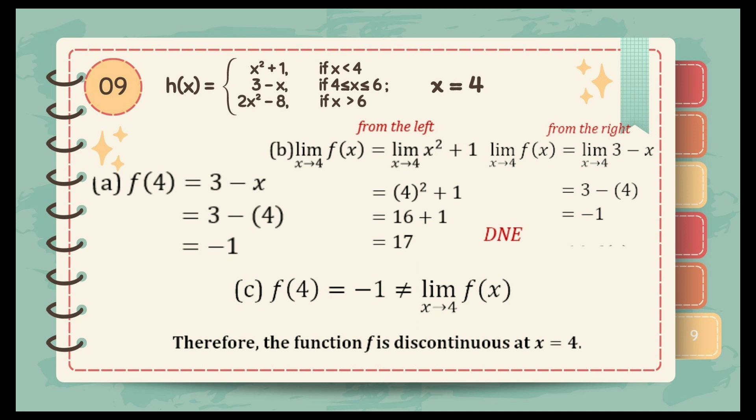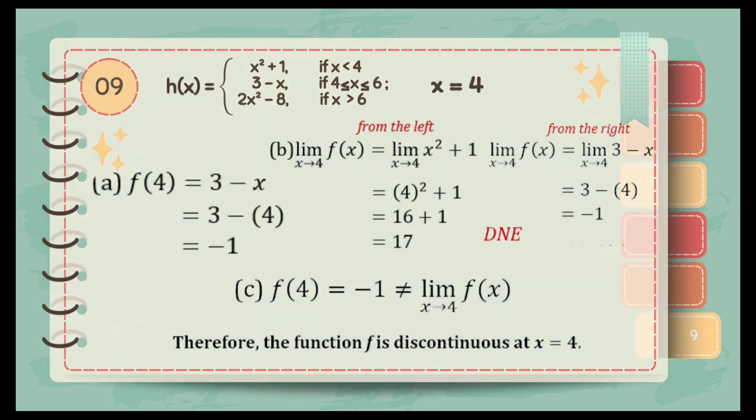For letter C, f of 4 is equal to negative 1 and it is not equal to the limit of f of x as x approaches to 4. Therefore, the function is discontinuous at x is equal to 4.